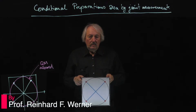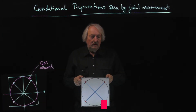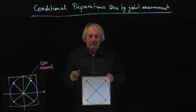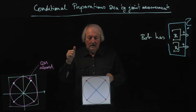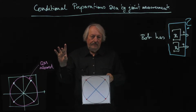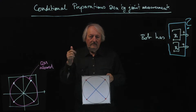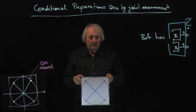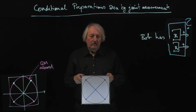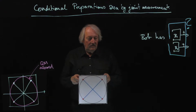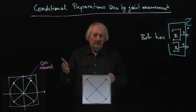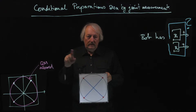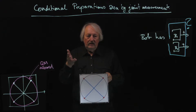Now we have to bring in the additional assumption that there is a joint measurement. The joint measurement means that Bob has one device which has two outcomes. If you have one device with two outcomes, that gives four possibilities altogether: plus-plus, plus-minus, minus-plus, minus-minus. These have probabilities — four numbers that add up to one — which means you have a three-dimensional object.